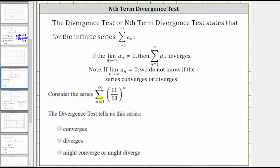We're asked to consider the series — the sum from n equals one to infinity of 11 thirteenths raised to the power of n. We're asked to apply the divergence test to determine whether the test tells us the series converges, diverges, or might converge or might diverge. Remember, the divergence test will never show convergence.